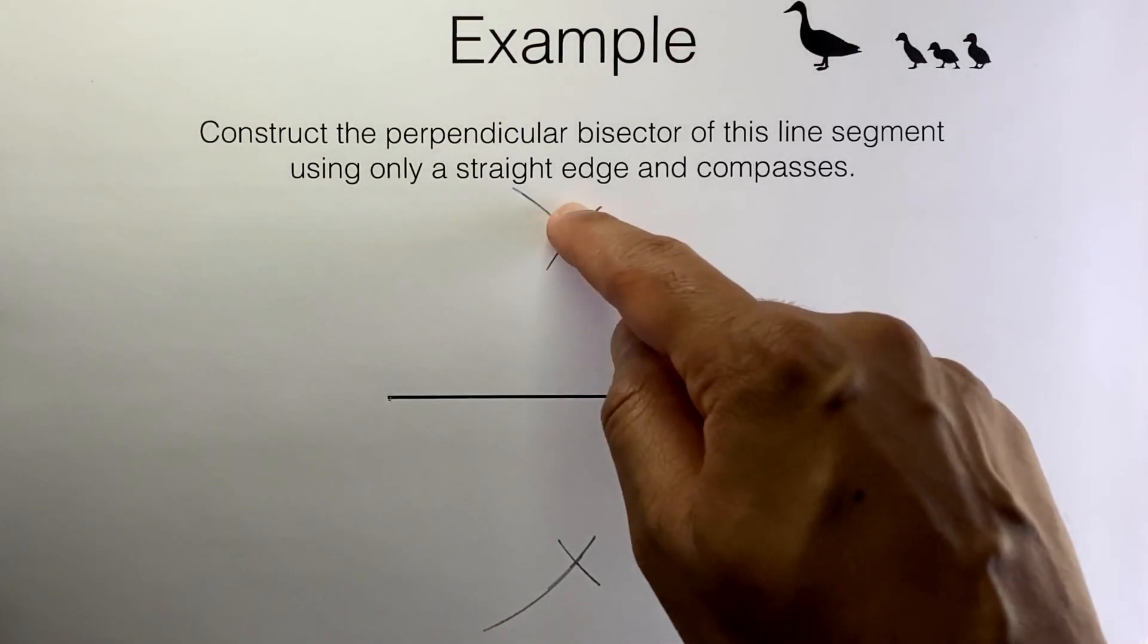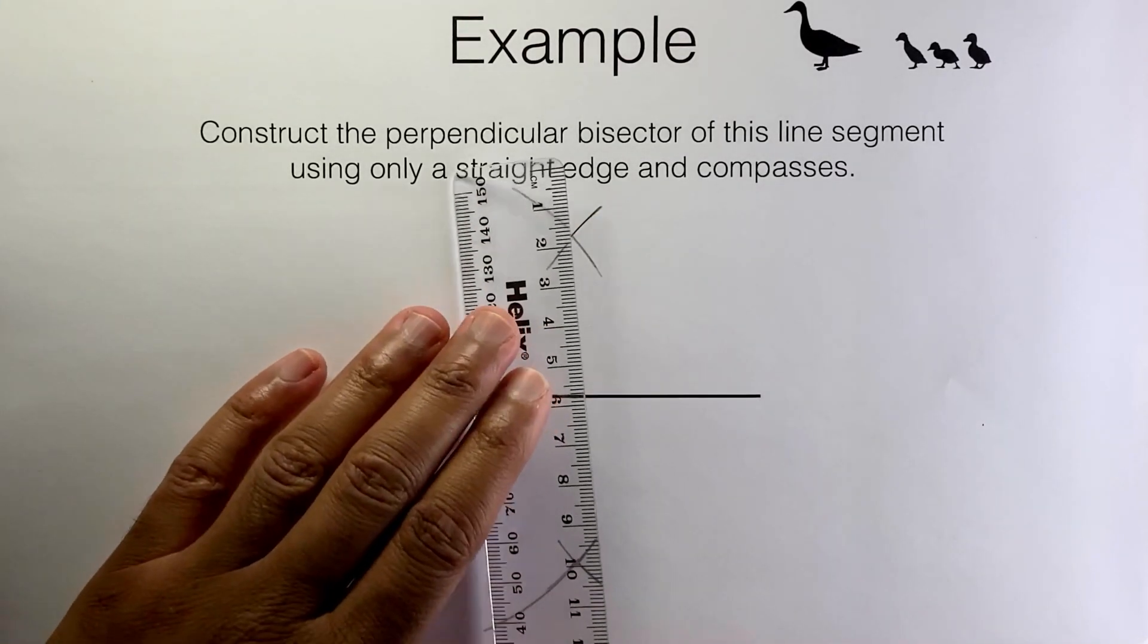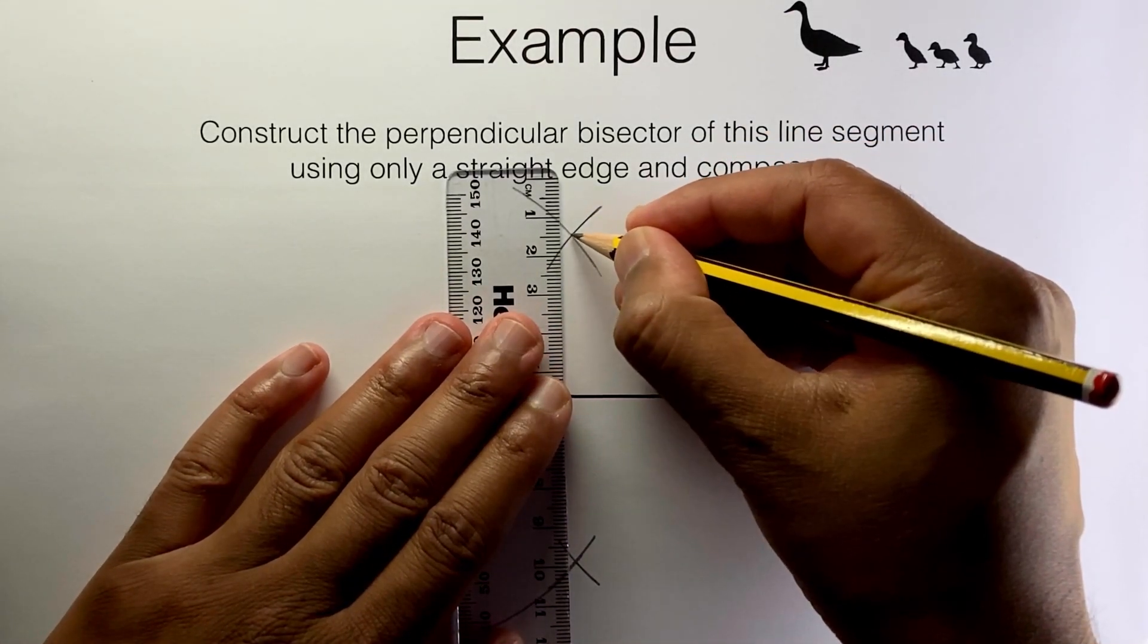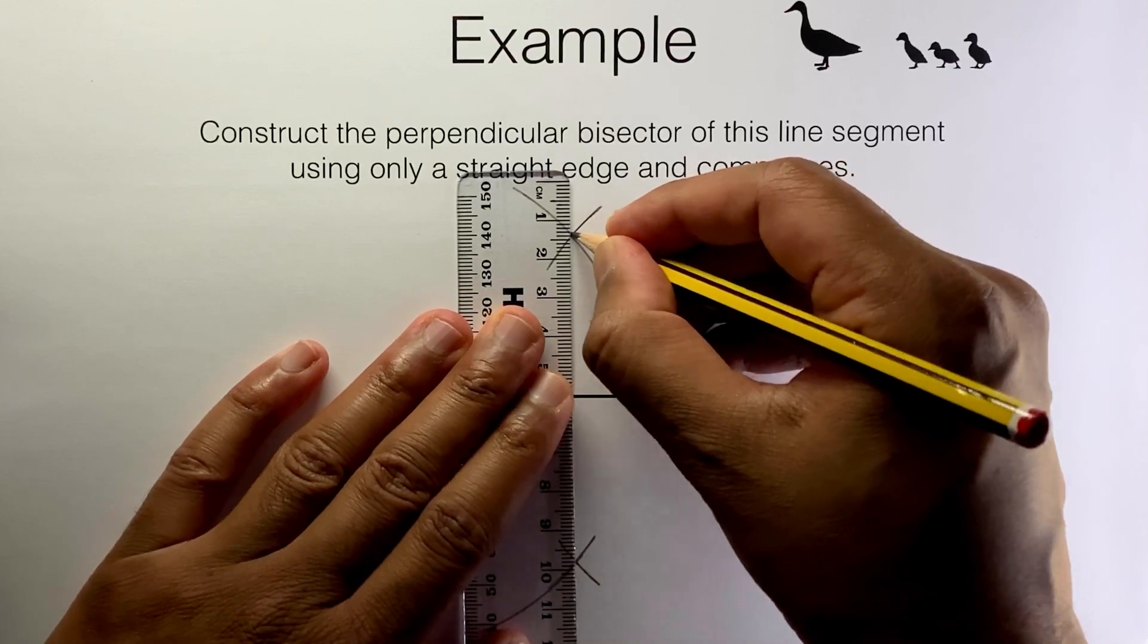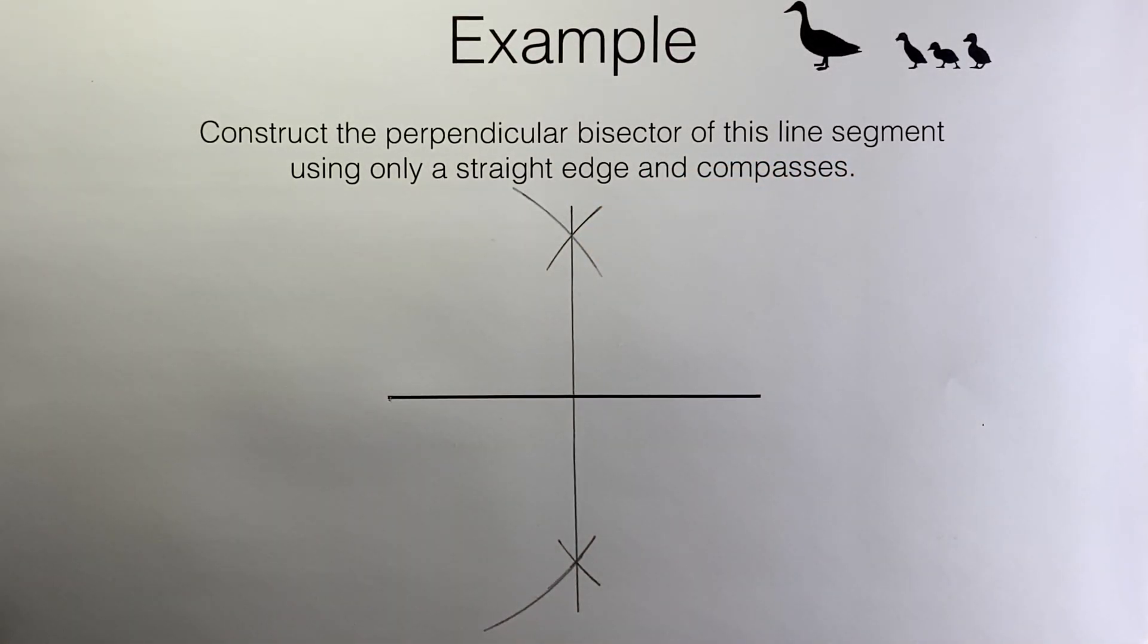Now these two crosses need to be joined up. I'm using the ruler here just to draw a straight line not to measure any lengths at all. And what I've done here is created the perpendicular bisector of this line segment.